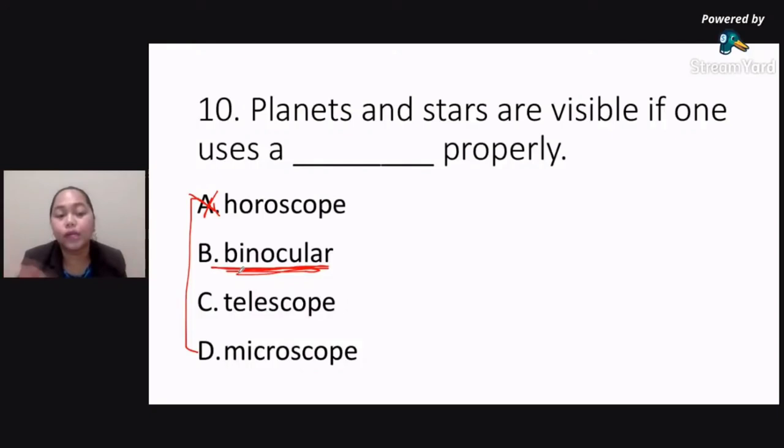And of course, letter C, telescope. Telescope, this is teleskopyo. Ito nga yung ginagamit para tingnan kung ano yung mga heavenly bodies that we have in the sky. So, pag may eclipse, pag merong mga alignment ng planets, this is usually what we use.